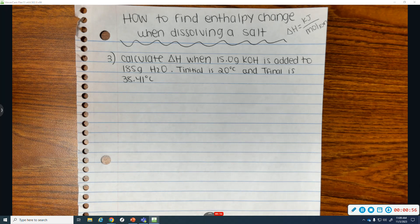So this question asks, calculate delta H when 15 grams of KOH are added to 185 grams of water. Initial temp is 20 degrees Celsius. Final temp is 38.41 degrees Celsius.